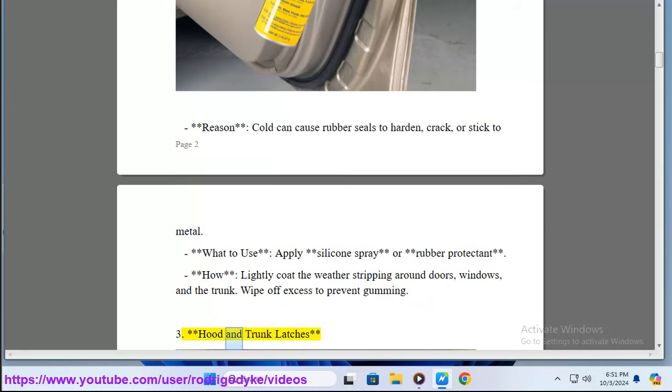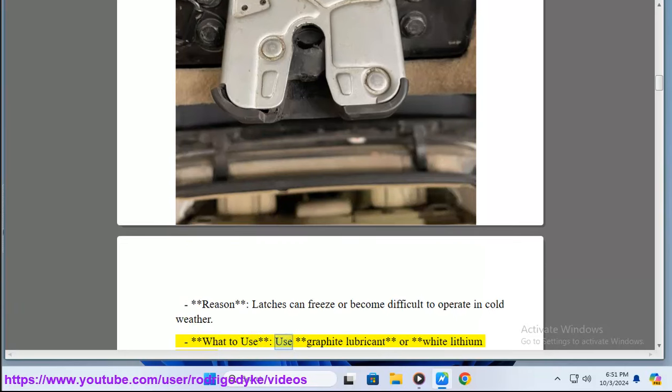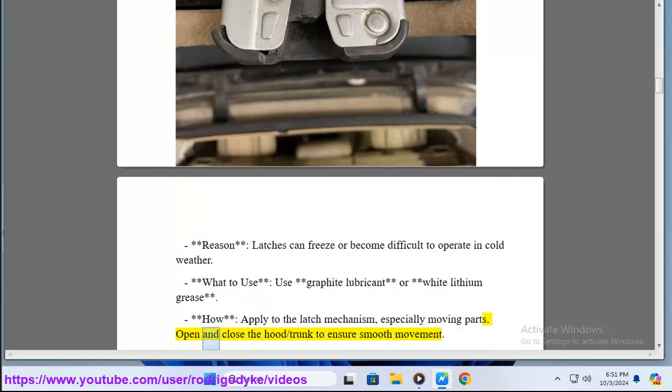3. Hood and Trunk Latches. Latches can freeze or become difficult to operate in cold weather. What to use? Use graphite lubricant or white lithium grease. How? Apply to the latch mechanism, especially moving parts. Open and close the hood/trunk to ensure smooth movement.